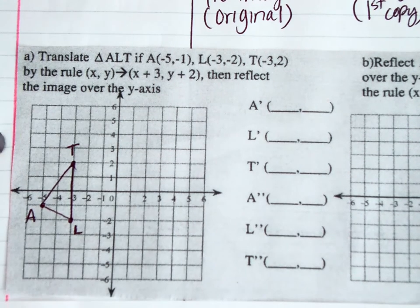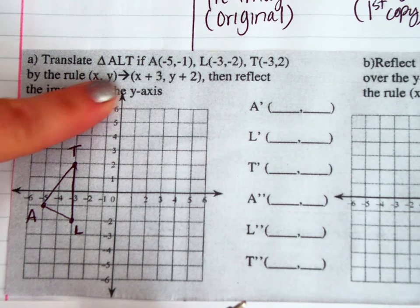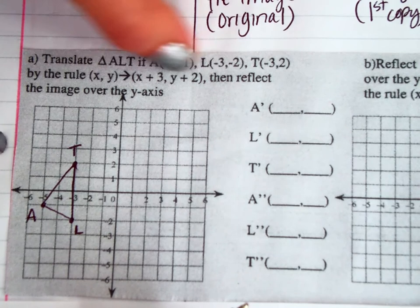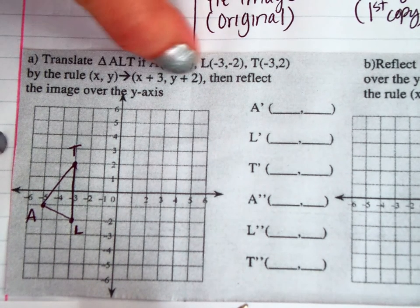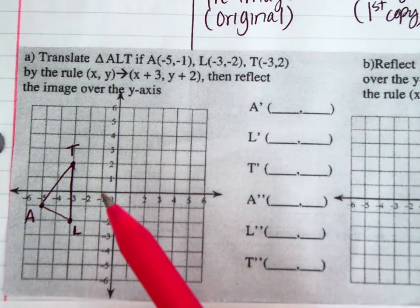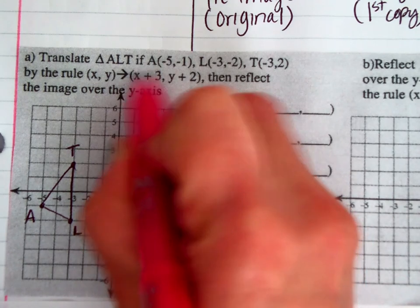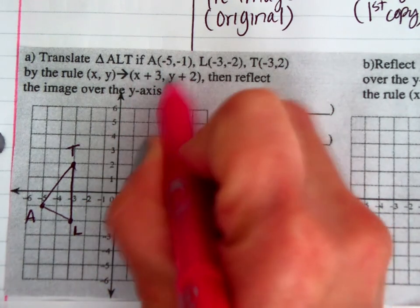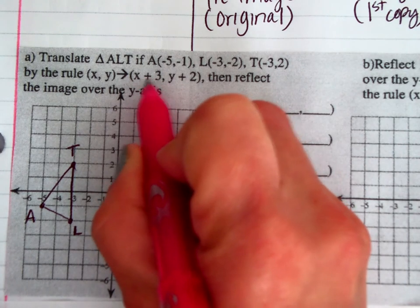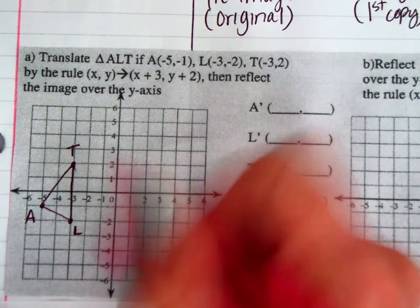Now, what we want to do to this drawing is follow the rule: (x, y) → (x+3, y+2). Anytime we see this type of notation, that indicates a translation — we're going to be sliding this shape around. I'm going to use the color pink to show my first copy. This tells me to move right 3 units in the left-right direction and up 2 units in the up-down direction. Every point is going to do the same thing.